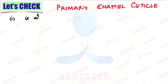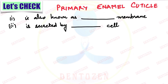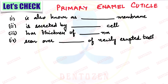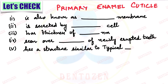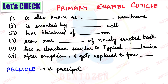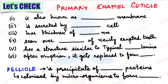Quick review: Primary enamel cuticle is also known as dash membrane; it is secreted by what type of cells; it has a thickness of how much; it is seen over dash of newly erupted teeth; it has a structure similar to basal lamina. After eruption it gets replaced to form what? Pellicle is a precipitate of what type of proteins, and when colonized by microorganisms what do we call it?